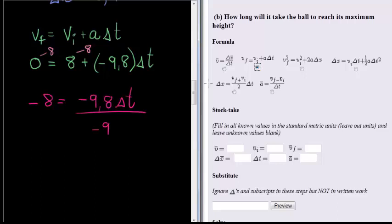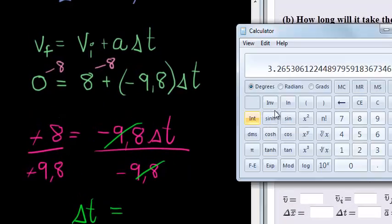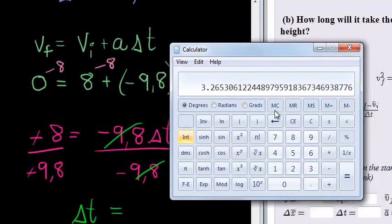Solving delta t means I'll have to divide with the negative 9.8 on both sides. I don't like working with negatives, so I'm just going to cancel those negatives right off. And then to solve delta t, all I need to do since these two cancel and I have delta t on its own, is take eight divided by 9.8. Obviously using my calculator.